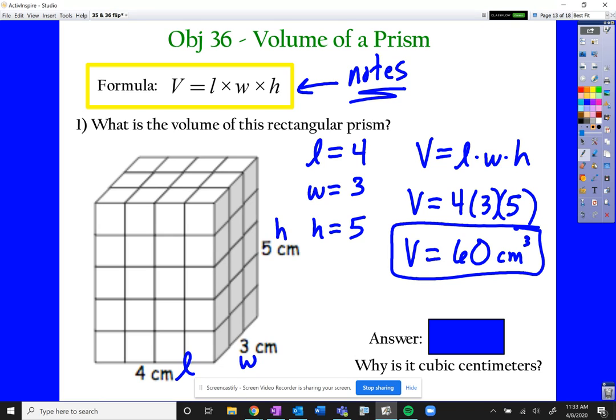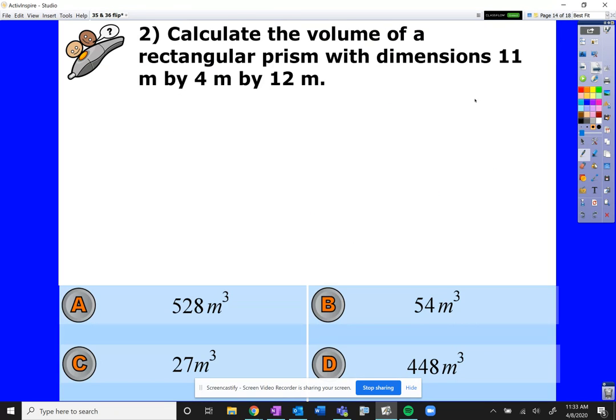Hopefully feeling good. Let's bang out some problems here. Because now we're filling in the space, we need the volume. We need how much Cheerio dust can you fit into that box. We need the length by the width, fill it all the way in with the height. There's our volume. Calculate the volume of a rectangular prism with dimensions 11 meters by 4 meters by 12 meters.